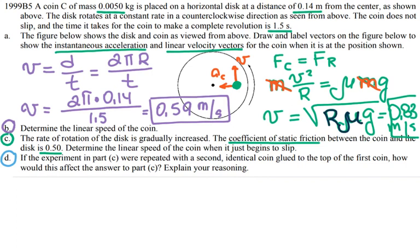And because the materials of the coins, even though there's two of them glued together, the materials of the coins are exactly the same—the one that is touching the surface—there would be no effect on the velocity. So the velocity would stay exactly the same.